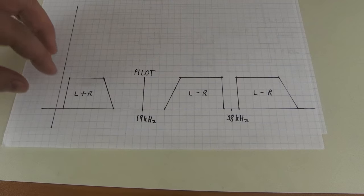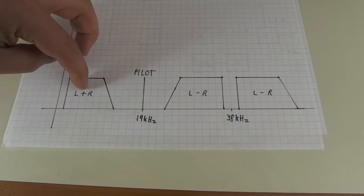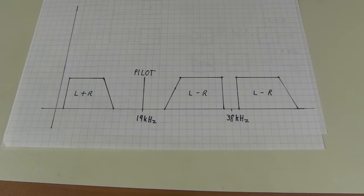And if you do it the other way around, if you subtract the left minus right from the left plus right, you'll be left with R or well technically 2R. So you have the right channel.